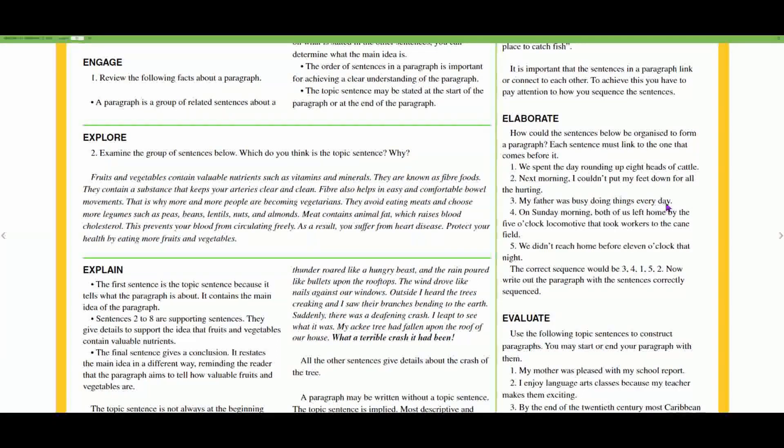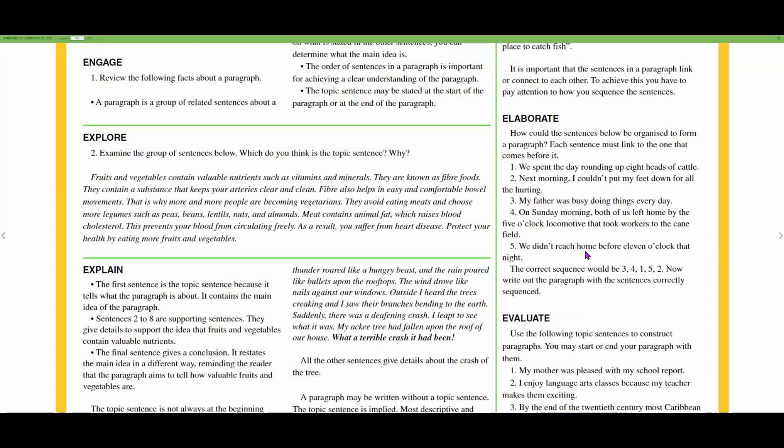The correct sequence would be: three, my father was busy doing things every day. Four, on Sunday mornings both of us left home by five o'clock locomotive that took workers to the cane fields. One, we spent the day rounding up eight heads of cattle. Five, we didn't reach home until eleven o'clock that night. And then two, next morning I couldn't put my feet down for all the hurting.